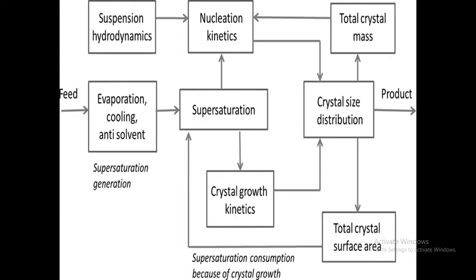A supersaturated solution is in a metastable state; it may be brought to equilibrium by forcing the excess solute to separate from the solution. There are two types of kinetics: nucleation kinetics, which is the rate of formation of stable nuclei, and growth kinetics, which is the rate at which a stable nucleus grows into a large or macroscopic crystal. Changing the scale or mixing conditions in a crystallizer can directly impact the kinetics of the crystallization process and the final crystal size.